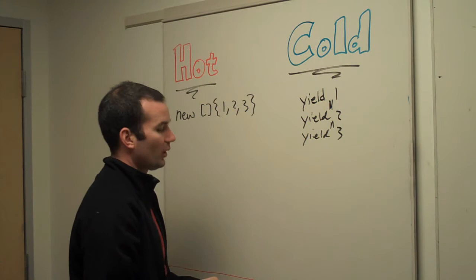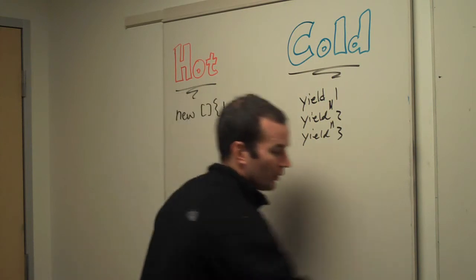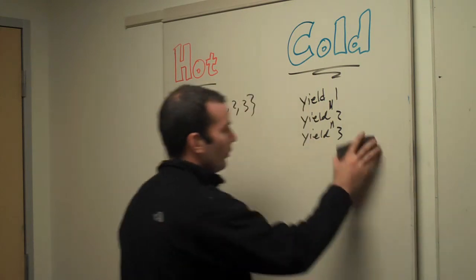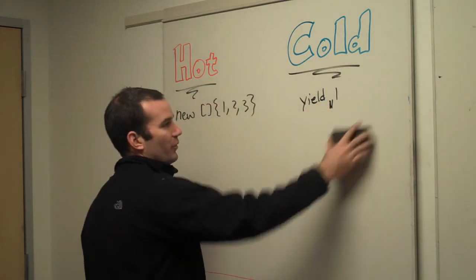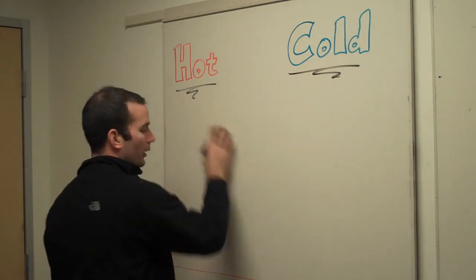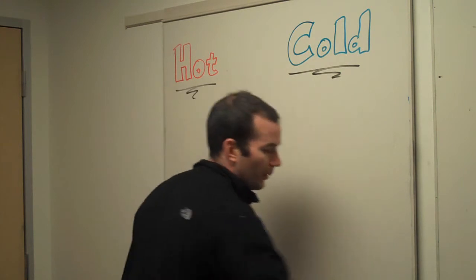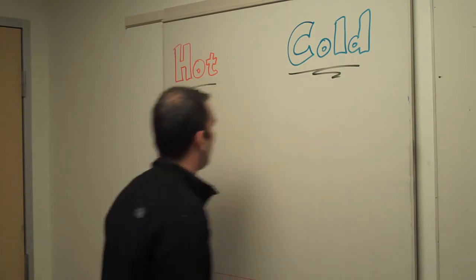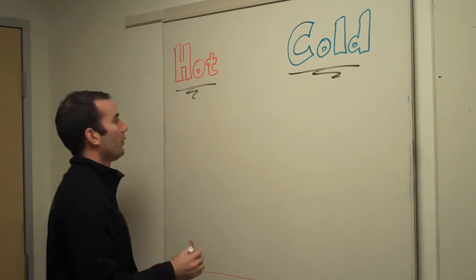And that's the difference between hot and cold enumerables. With observables, we have a similar notion — we have hot observables and we have cold observables.